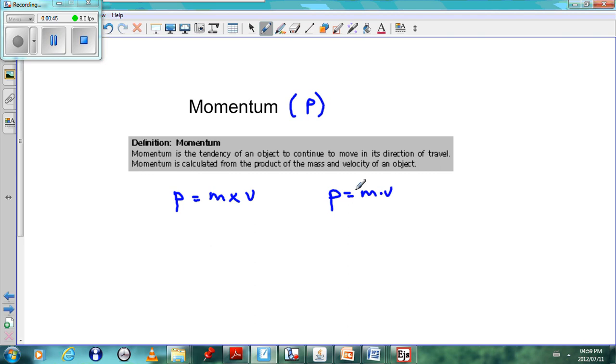For example, if we have a car with a mass of 1000 kilograms moving at 20 meters per second, then 1000 times 20 will give us 20,000.